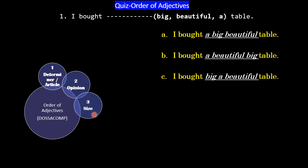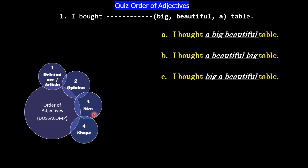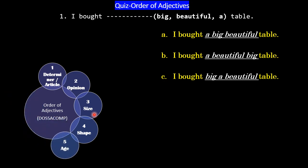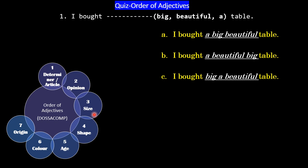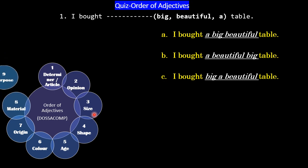Next is size — big, small, huge. Then shape — round, rectangular, and other shapes. Next is age — old, new. Then color — all colors. And the other one is origin — Indian origin, Chinese origin, German origin.